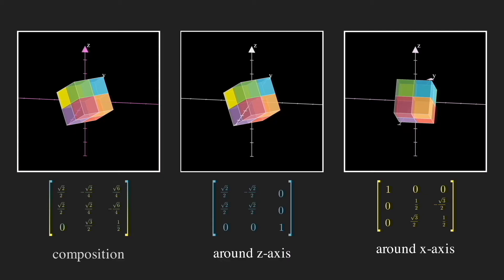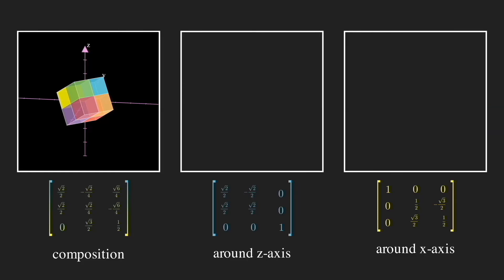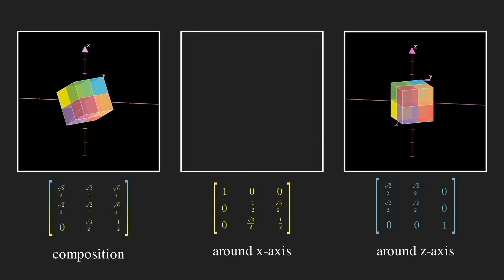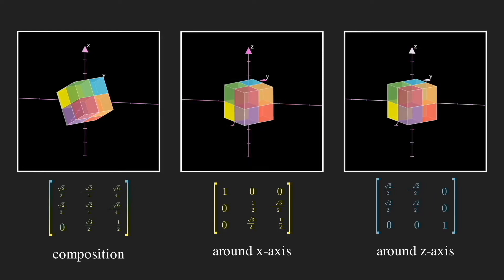If you had noticed, I really tried to punctuate the word sequential just now, because suppose we reverse the sequence of the two rotations, namely z first, then x, we actually get something different than the original composition. Look at the position of the orange cube. It's different.